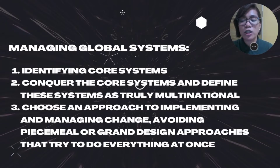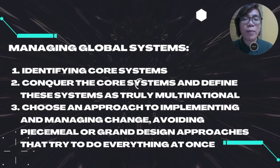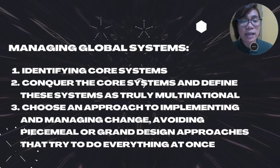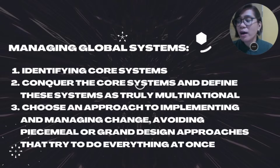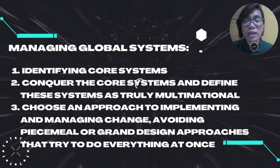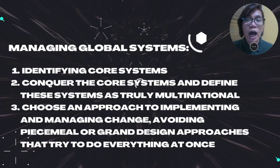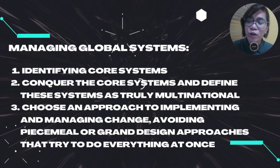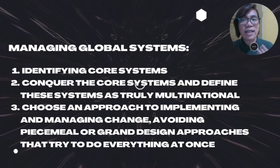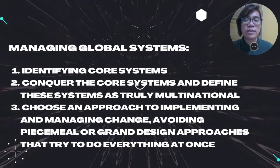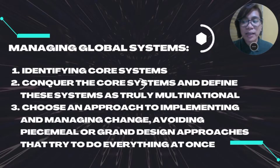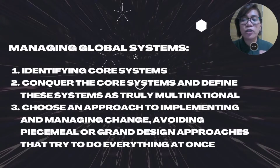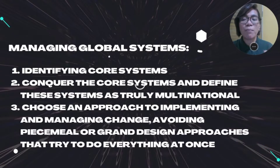The second strategic stage is to take control of the fundamental systems and establish them truly as global. The third step is to decide on a strategy for implementing and managing change, avoiding big picture or piecemeal strategies that try to implement everything at once. With a precise and clear vision of the international capabilities, the organization should have in five years evolved existing applications into multinational ones.